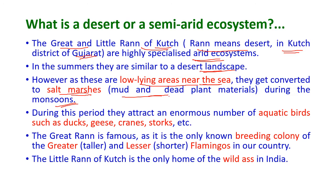During the monsoon period, these areas are covered with mud and peat — peat being dead plant material. Due to the availability of water, they attract an enormous number of aquatic birds such as ducks, geese, cranes, and storks. The Great Rann is famous as the only known breeding colony of the greater and lesser flamingos in India. The Little Rann of Kutch is the only home of the wild ass in India.